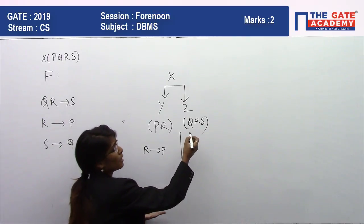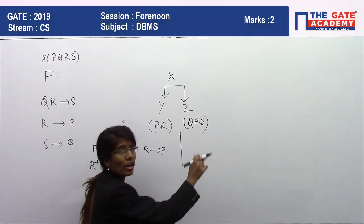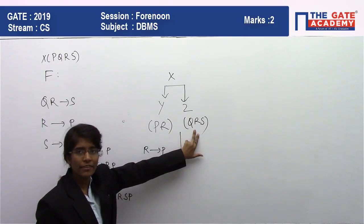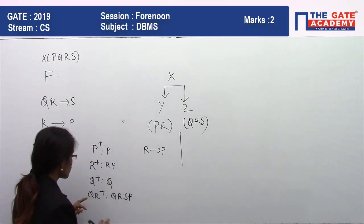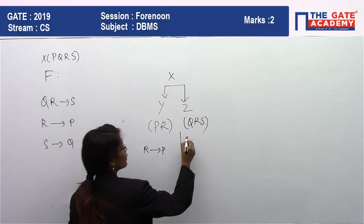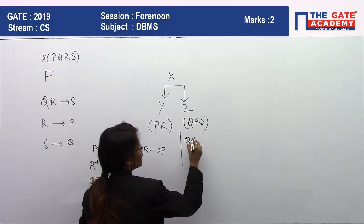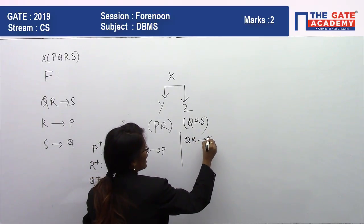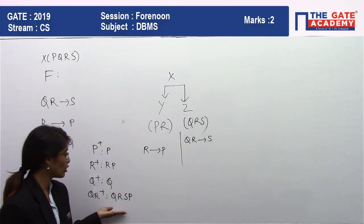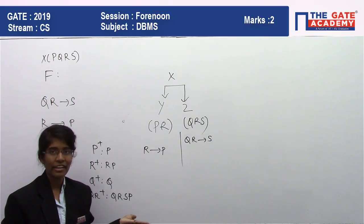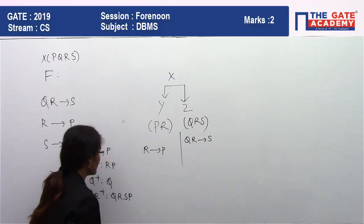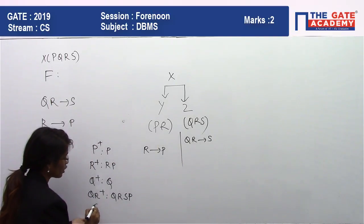However, for table Z which contains only QRS, wherever P appears we ignore it. So from QR⁺ we derive QR → S for table Z. QR → Q and QR → R are trivial, so we consider only QR → S.